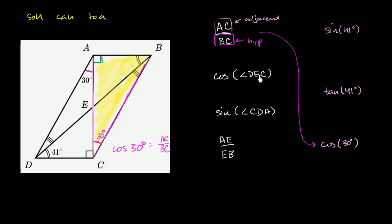Now let's look at the cosine of angle DEC. DEC is this angle right over here. Cosine is adjacent over hypotenuse. The adjacent side to angle DEC — note that side DE is the actual hypotenuse, so the adjacent side is EC. And the hypotenuse is side DE. So cosine of angle DEC equals the length of segment EC over the length of segment DE.